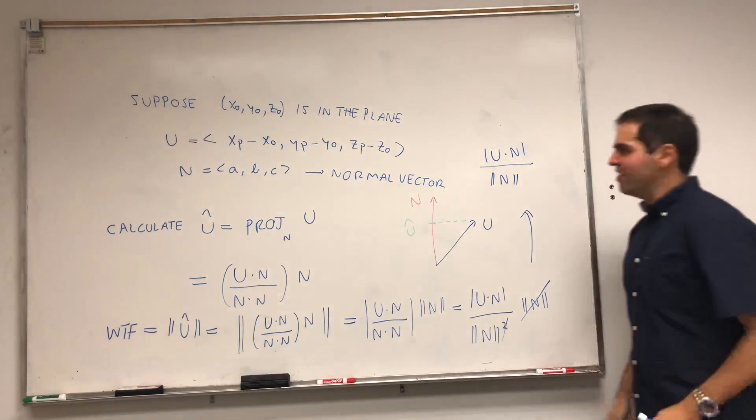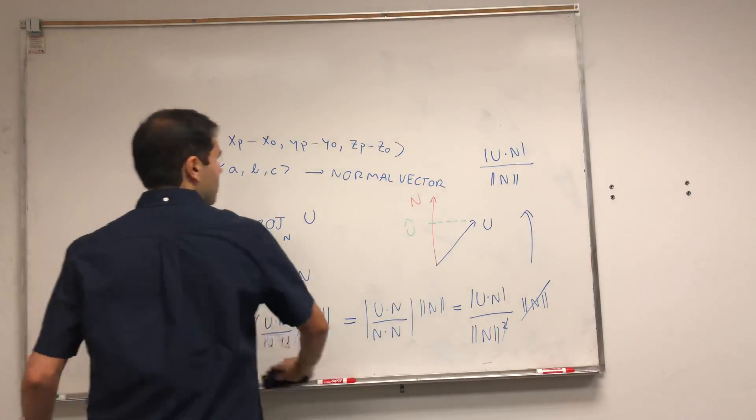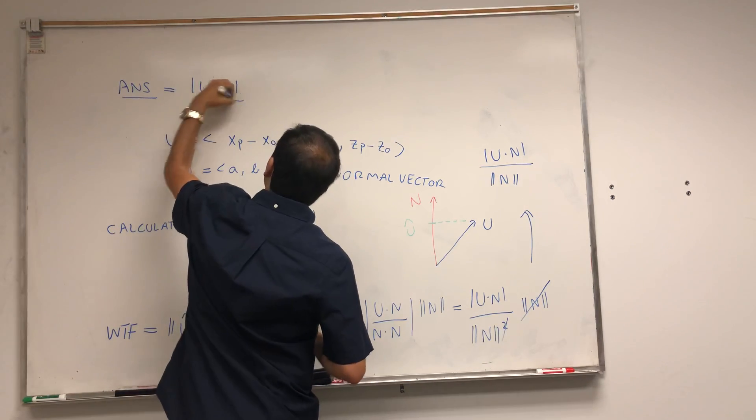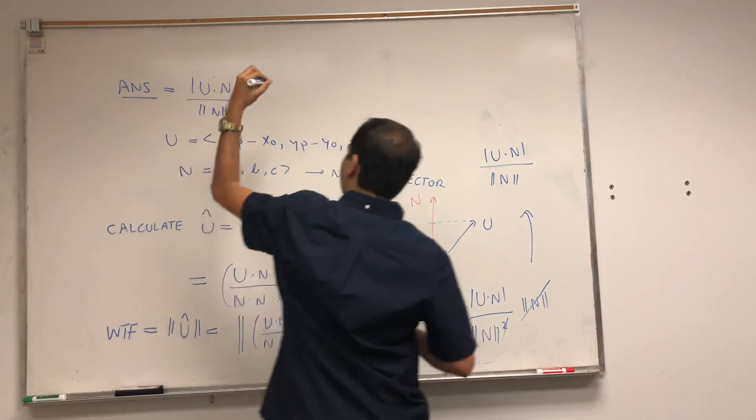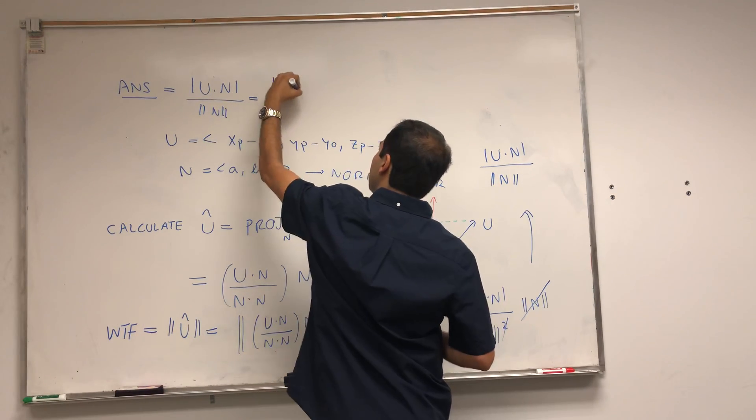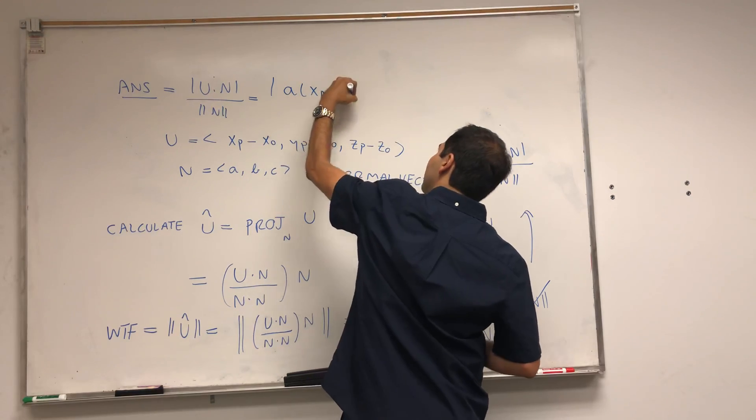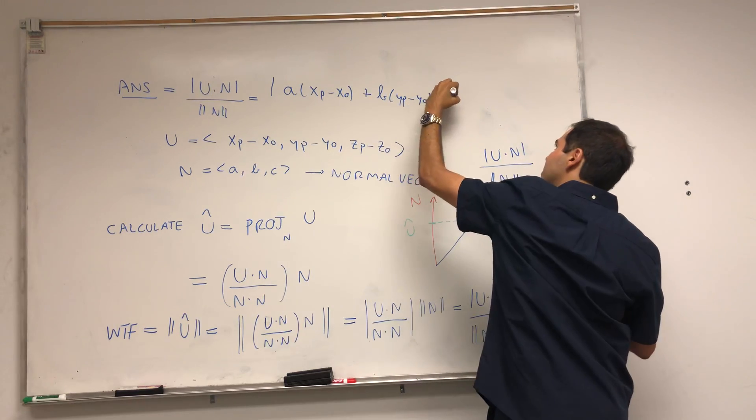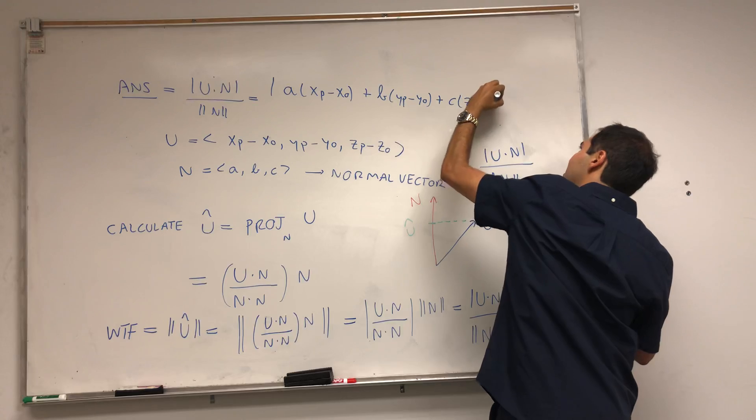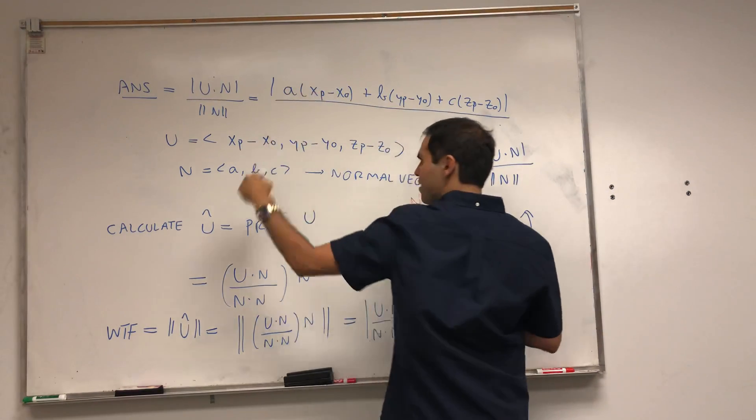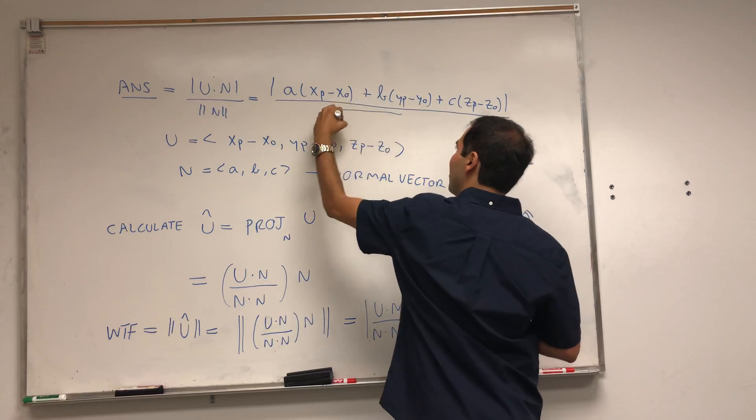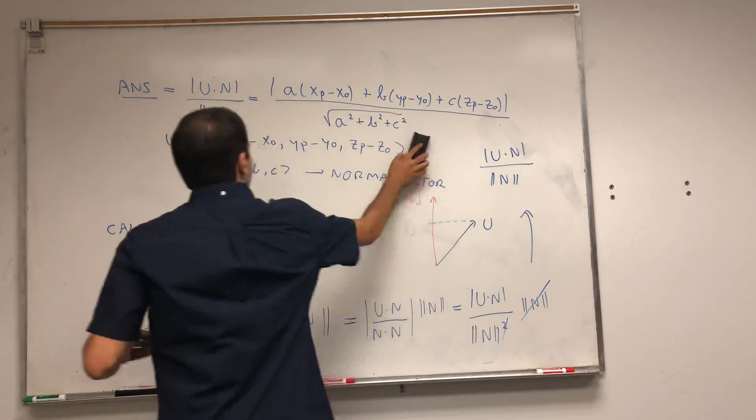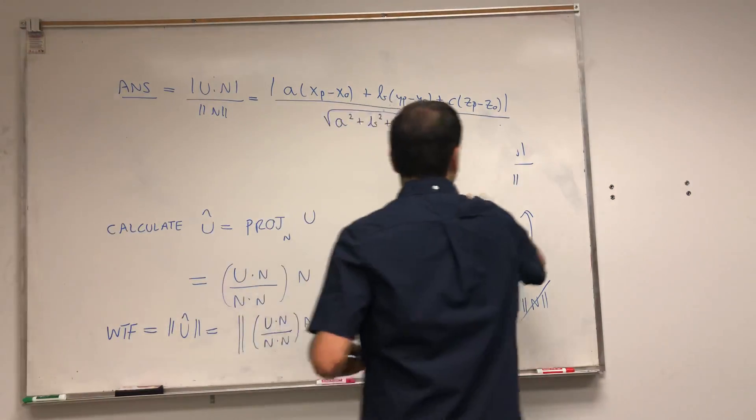So really your answer becomes |U · N| / |N|. And now let's calculate this. It's |A(xp - x₀) + B(yp - y₀) + C(zp - z₀)| over √(A² + B² + C²). Again, I just used the definitions of U and N.